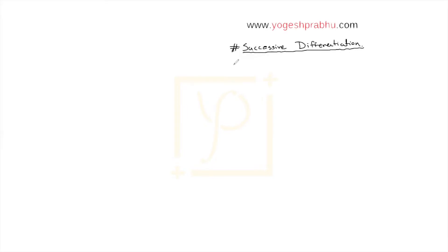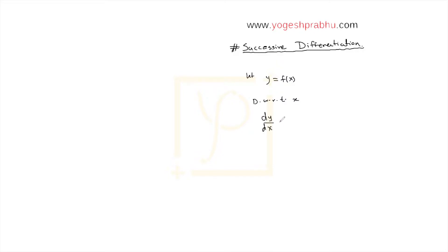In this video we will be discussing successive differentiation. Let me explain what this means. Say we begin with an example: y is a function of x. Now if we differentiate with respect to x, we write this as dy by dx, and we write the function as f dash of x. We call this the first derivative — this is the first differentiation.